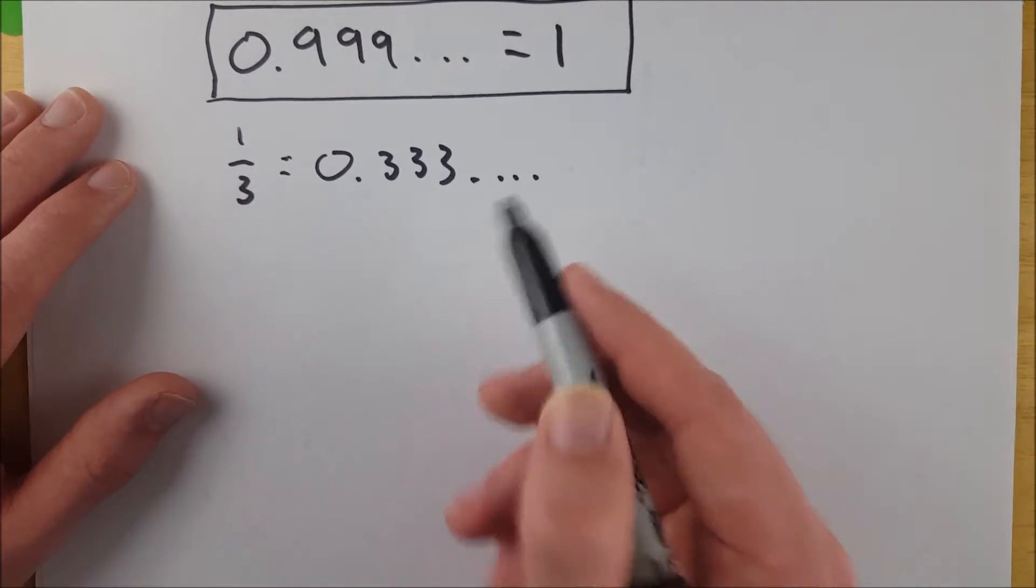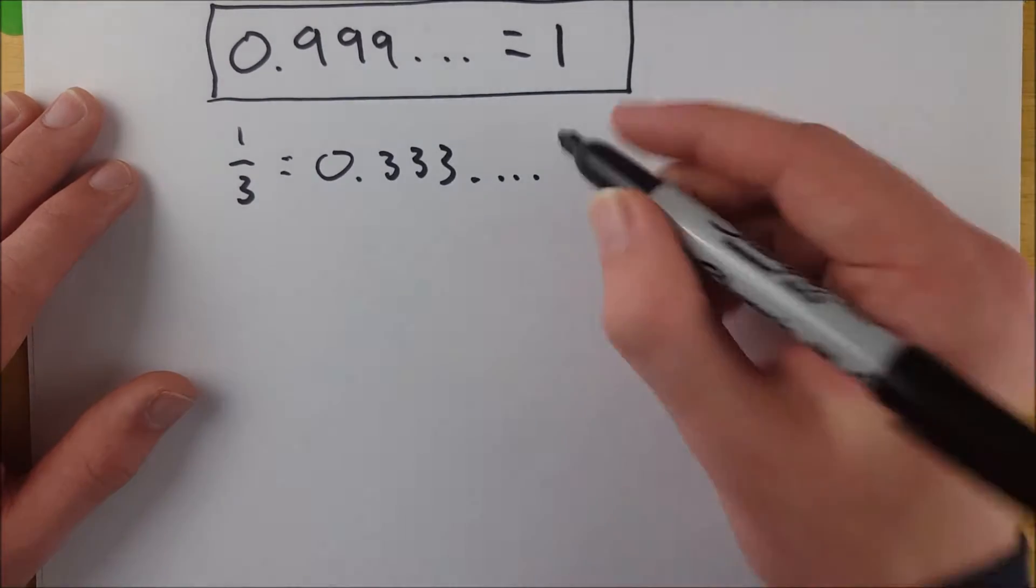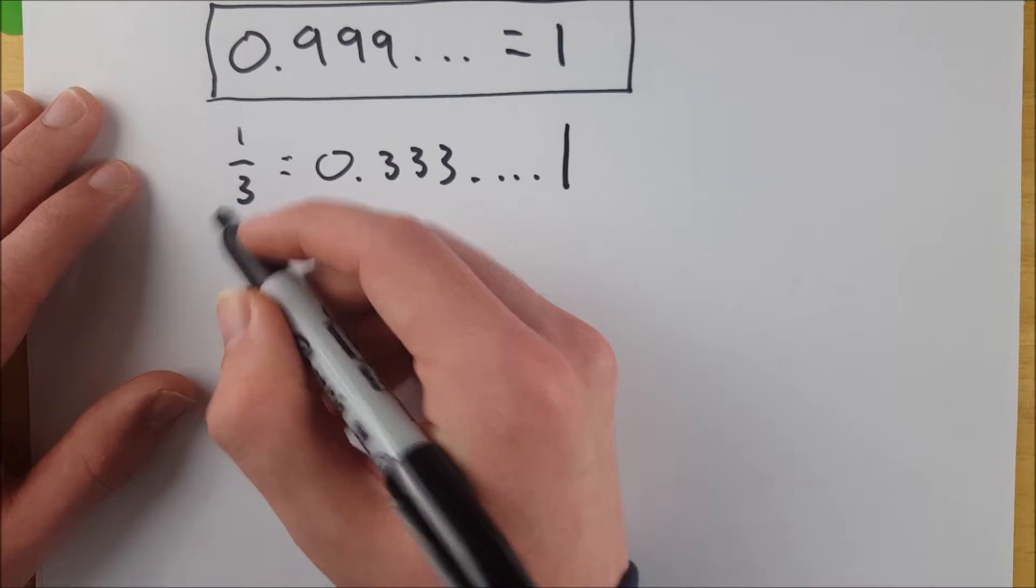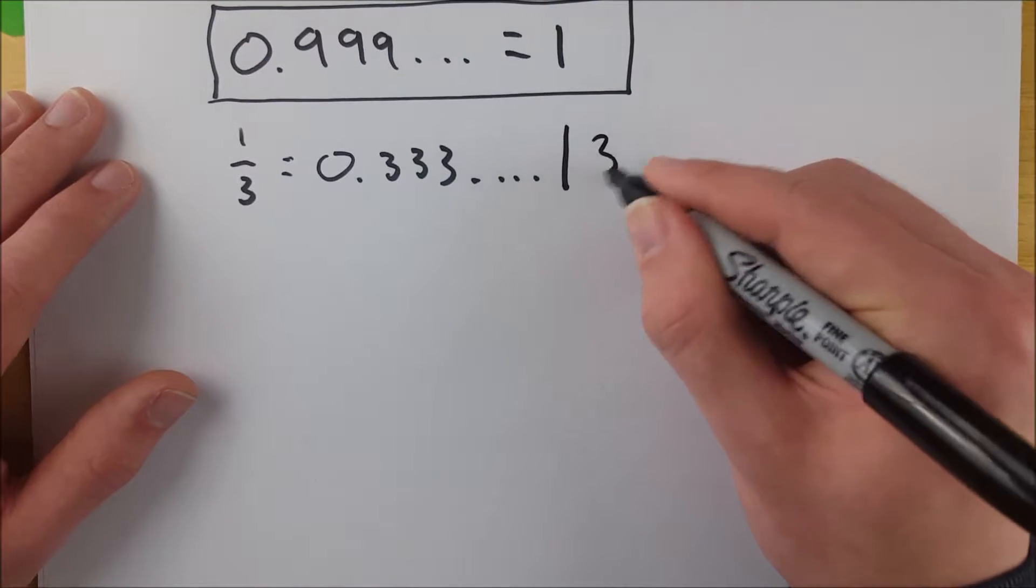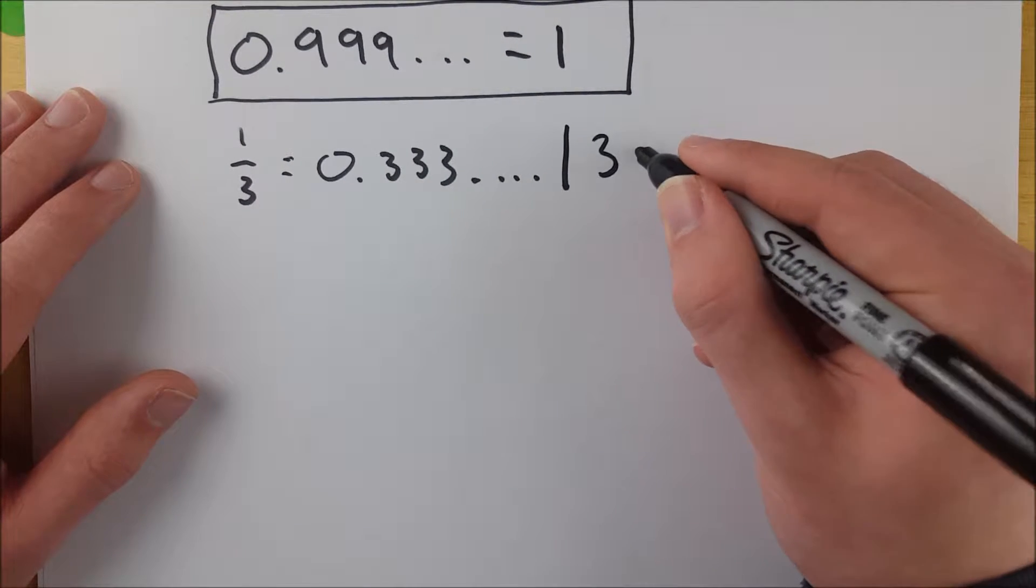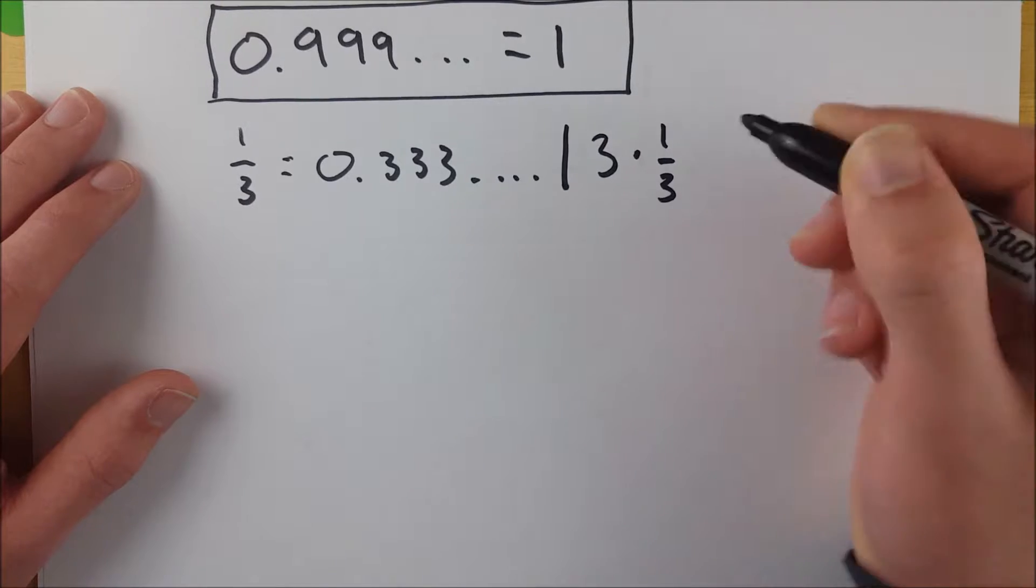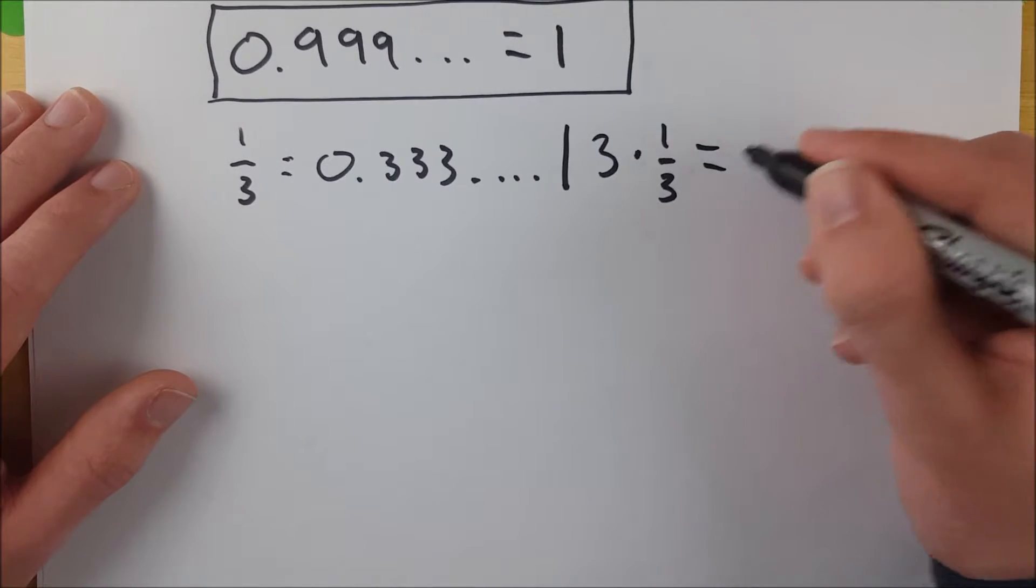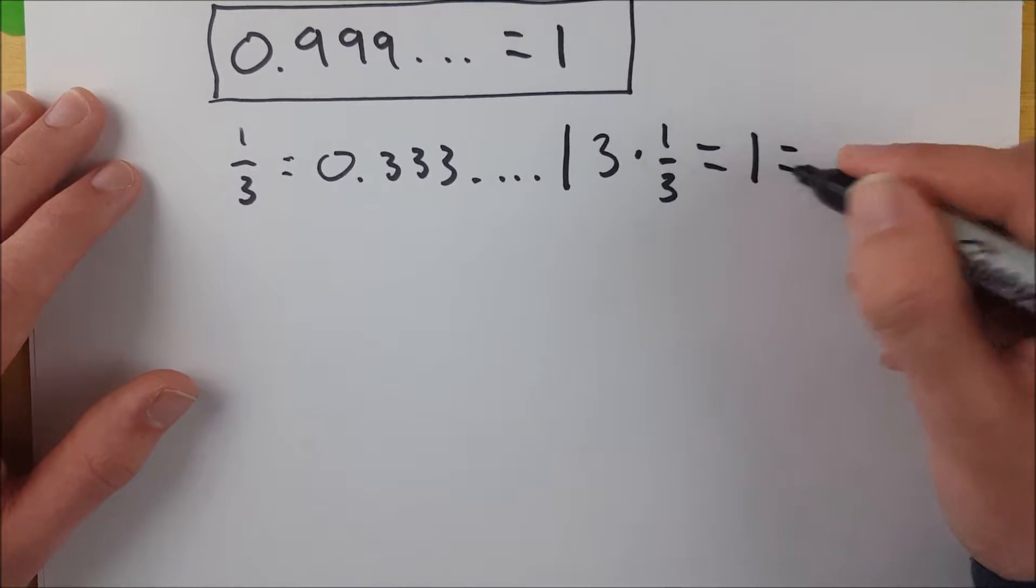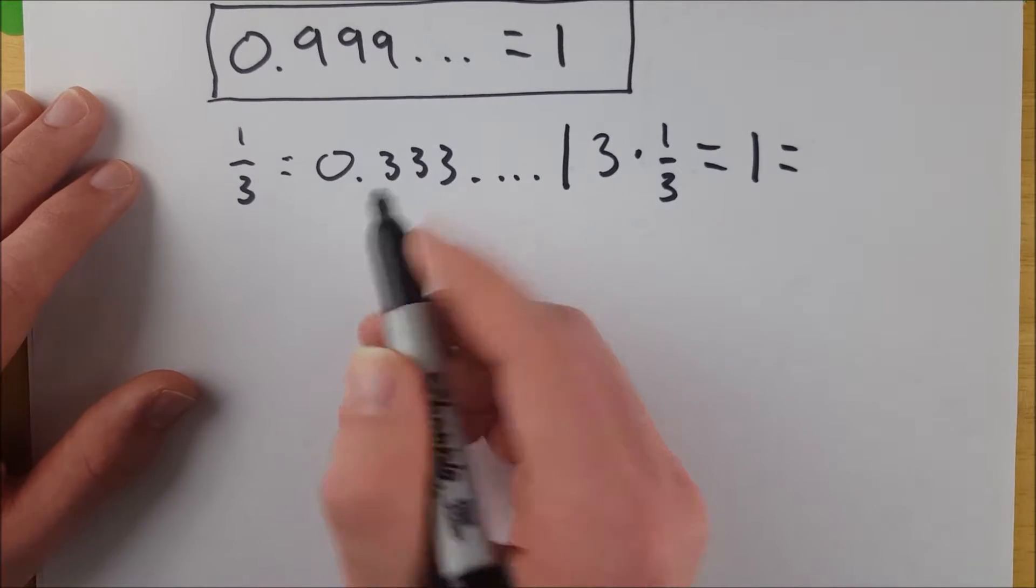So then, all you have to do is multiply both sides of the equation by 3, and what are you left with? One-third times 3, well, we know that that is equal to 1.